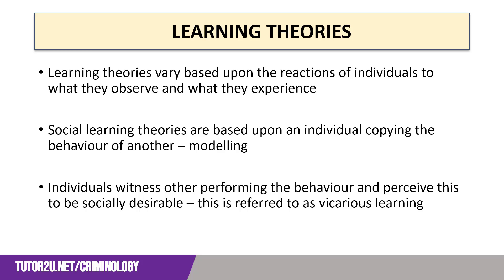Social Learning Theories are based upon an individual copying or imitating the behaviour of another person through a process known as modelling. Individuals will witness other people performing the behaviour and perceive that behaviour to be socially desirable. This is referred to as vicarious learning.